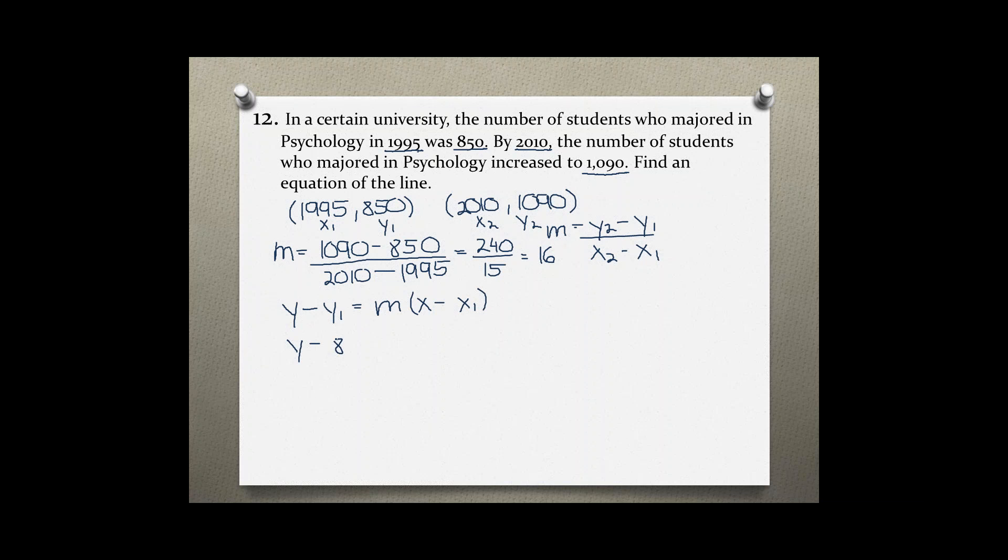Equals our slope is 16 times x minus x1, 1,995.